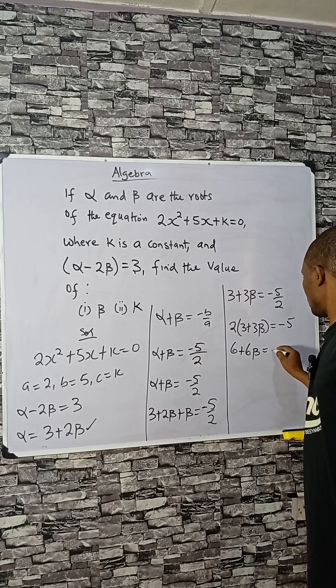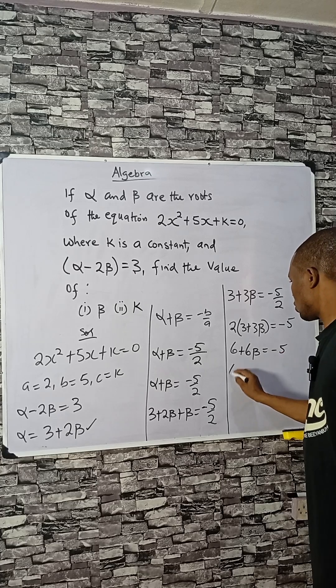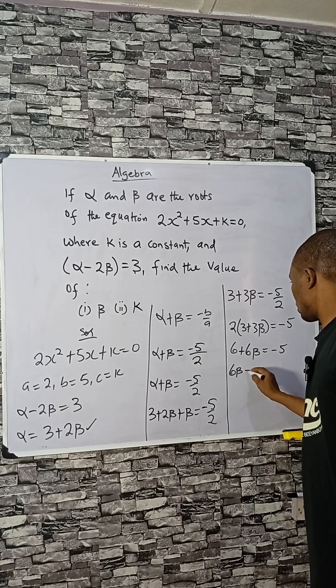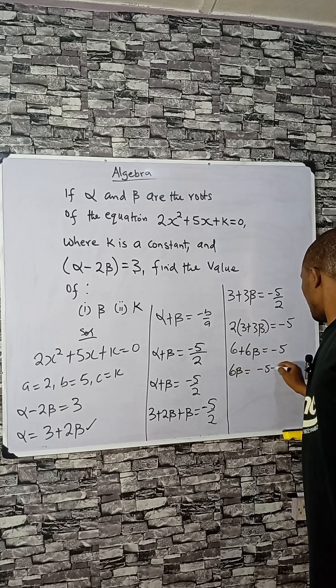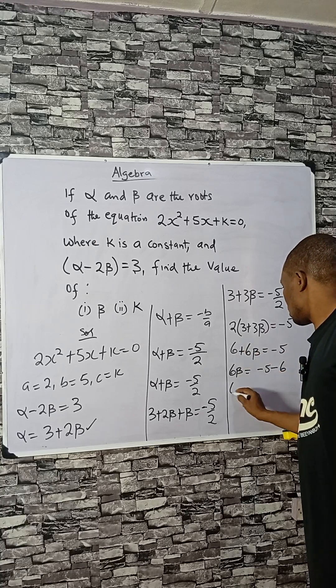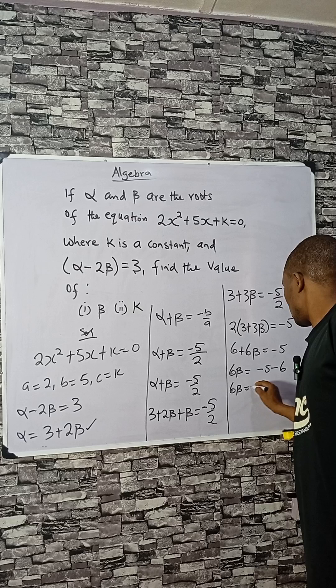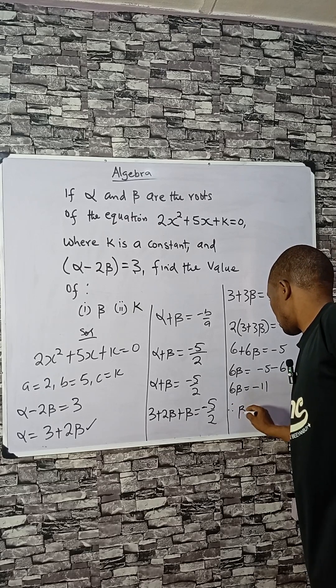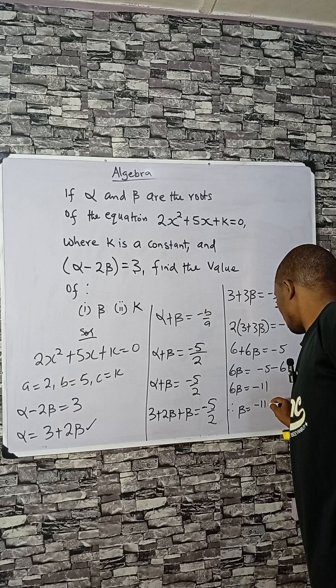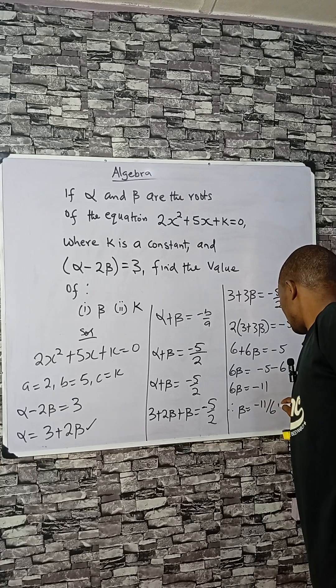So 6 beta from here equals minus 11, and therefore beta is minus 11 divided by 6. This is the answer for beta.